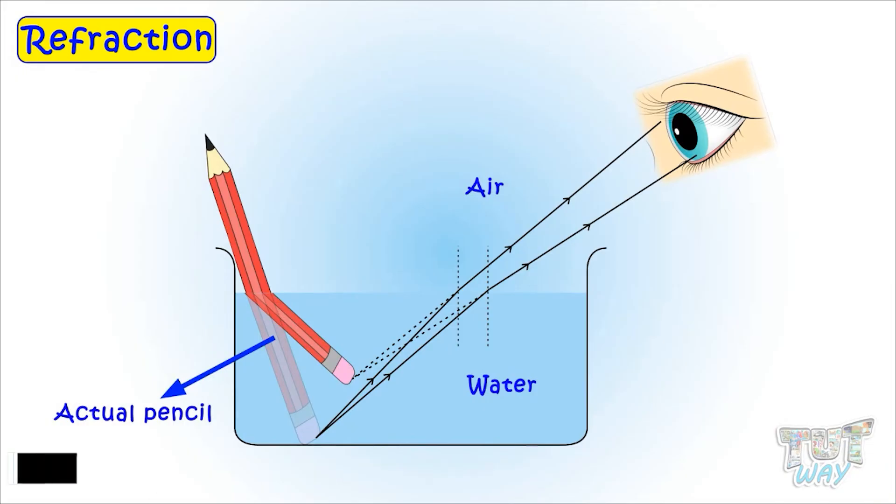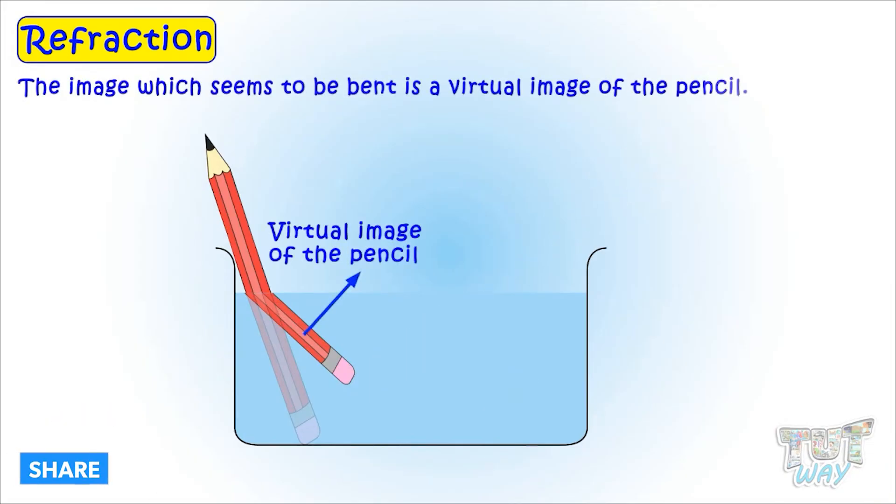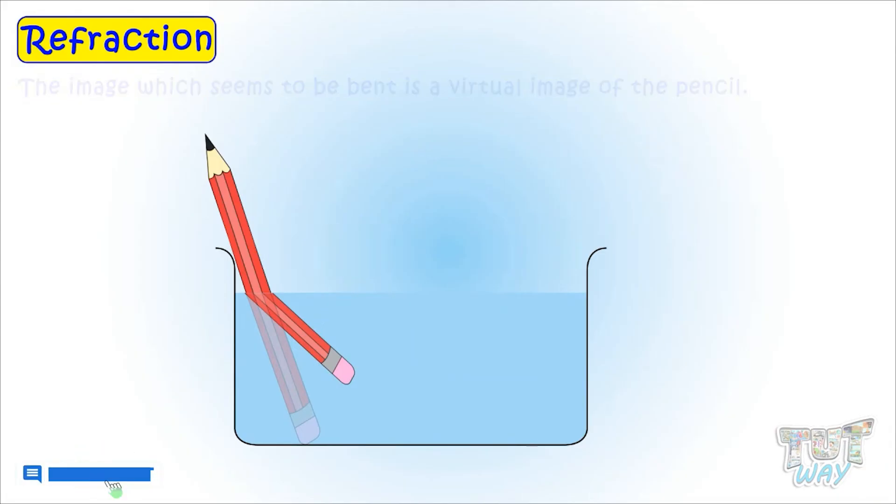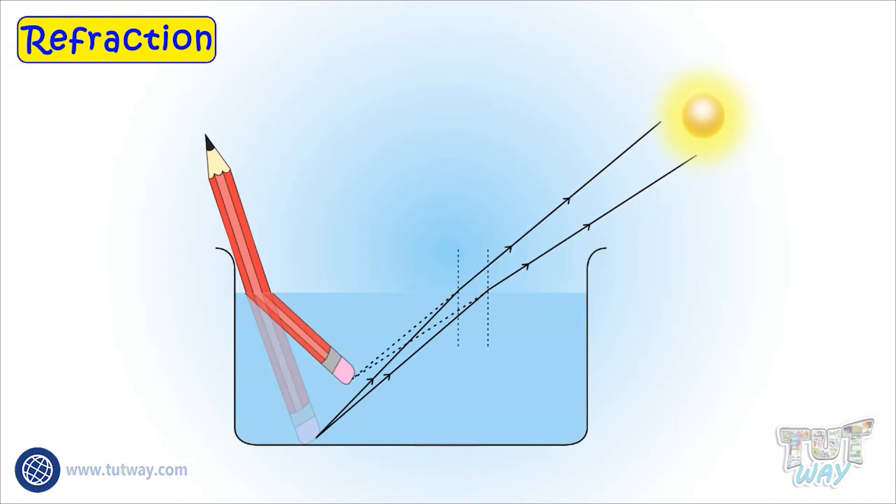The image which seems to be bent is a virtual image of the pencil. We cannot see the actual image of the pencil in the water because the light coming from it is bent, and we only see its virtual image which seems as if it is bent.